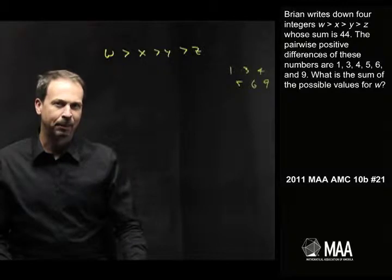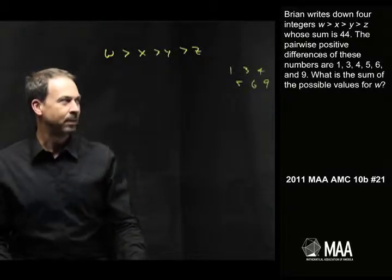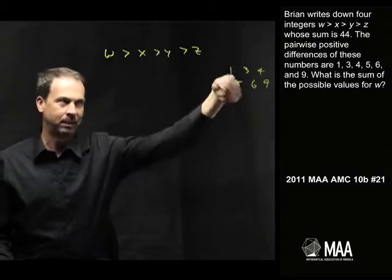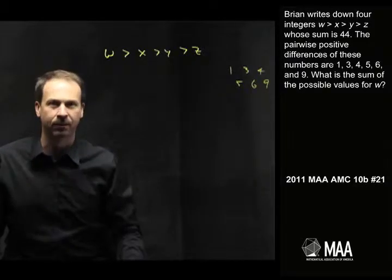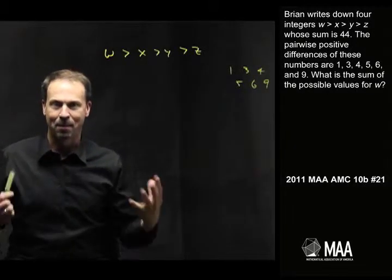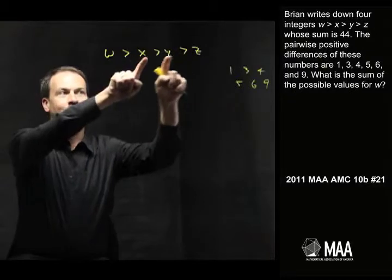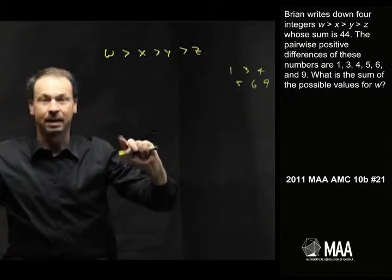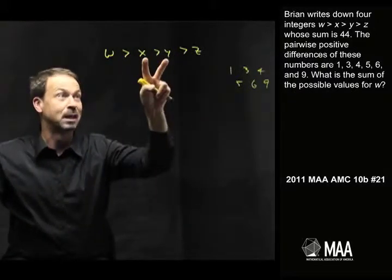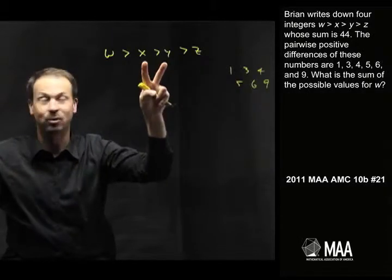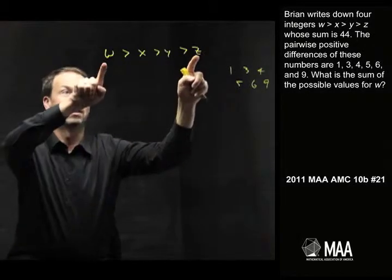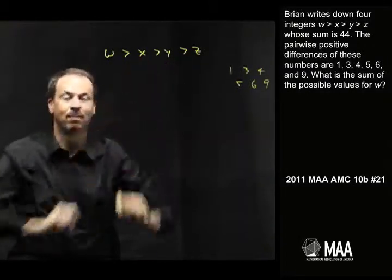So the middle sentence is a little bit confusing. The pairwise positive differences of these numbers are these various values. Alright, pairwise, it must be about pairs. So if I take pairs of these numbers, or different pairs, lots of them, I guess the positive differences, the differences between these numbers must be one of these numbers. Alright, so two of these numbers differ by 1, another two differ by 3, some differ by 5, a pair differ by 9, and so on.